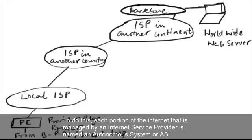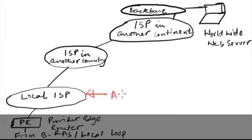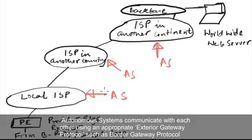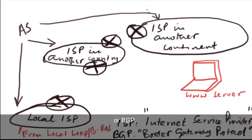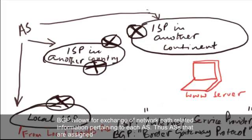To do this, each portion of the internet that is managed by an internet service provider is named an autonomous system, or AS. Autonomous systems communicate with each other using an appropriate exterior gateway protocol such as border gateway protocol, or BGP. BGP allows for exchange of network path related information pertaining to each AS.